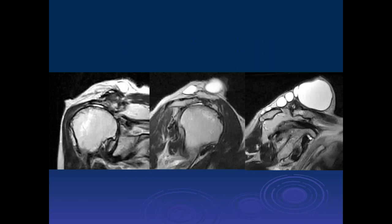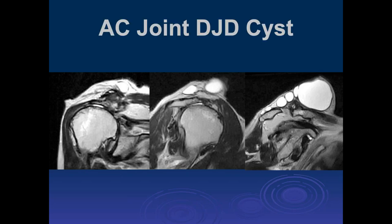A recent Radiographics article describes a giant cystic structure superior to the AC joint—caused by tearing of the AC ligament combined with rotator cuff arthropathy. Joint fluid shoots up into the AC joint—a so-called geyser phenomenon—then exits and forms these very large superior cysts.